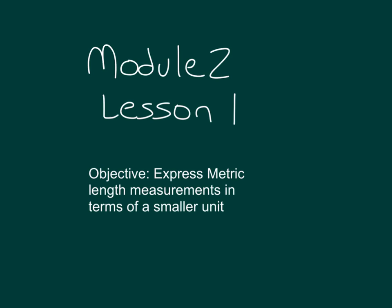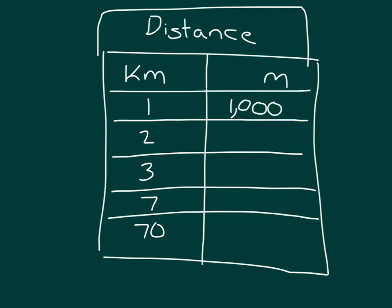The objective is to express metric length measurements in terms of a smaller unit. Go ahead and copy and complete this table and chart. We'll work on it together. So pause the video to write out the table and chart, and then replay it after you have it copied so that we can walk through this problem together.